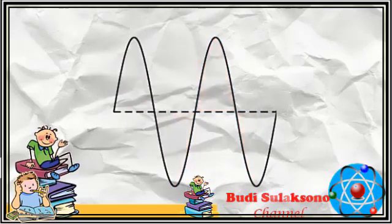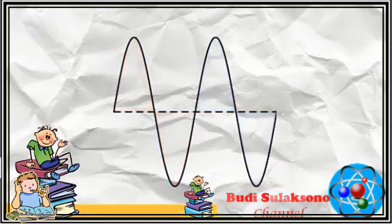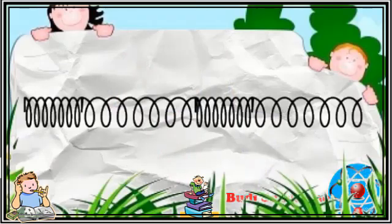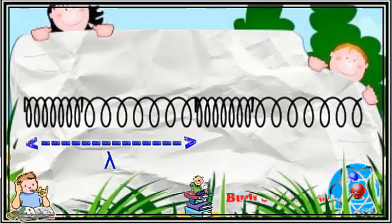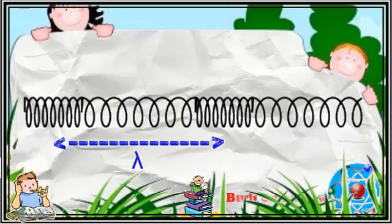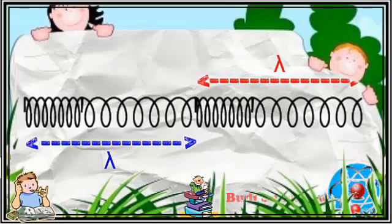Pada gambar ini, Anda dapat melihat dua buah gelombang. Sedangkan gelombang longitudinal adalah gelombang yang arah rambatannya searah dengan arah getarannya. Contoh gelombang ini dapat Anda lihat pada gelombang bunyi dan gelombang pada slinki. Jarak satu gelombang sama dengan jarak satu renggangan ke satu rapatan, atau jarak dari tengah renggangan ke tengah renggangan berikutnya, atau jarak dari tengah rapatan ke tengah rapatan berikutnya. Pada gambar ini, Anda juga sedang melihat dua buah gelombang.